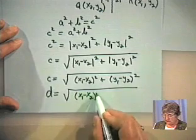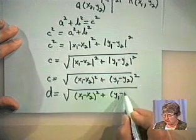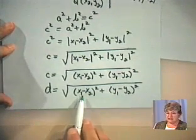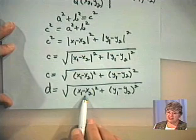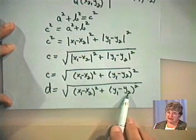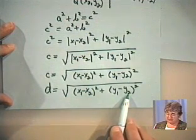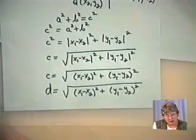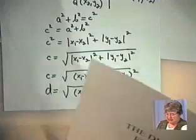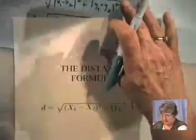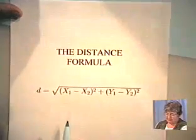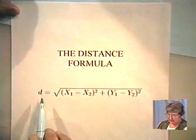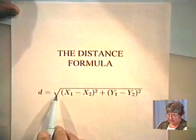I like to remember it in words — I think sometimes when you remember something in words, you tend to remember it a little bit longer. It's the square root of the difference of the x-coordinates squared plus the difference of the y-coordinates squared. That's the distance formula. So to recap: if we have any two points x1, y1 and x2, y2, the distance formula is given by that square root.